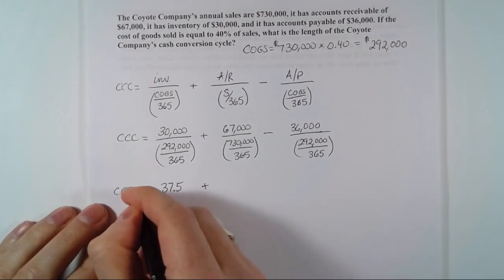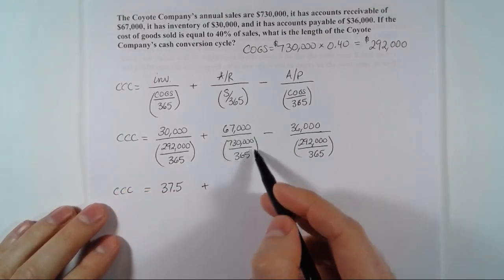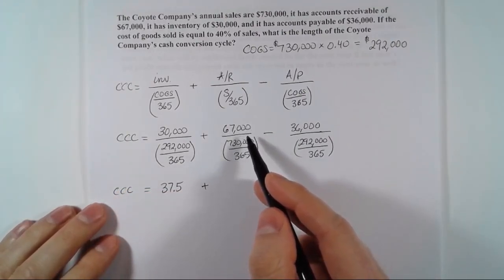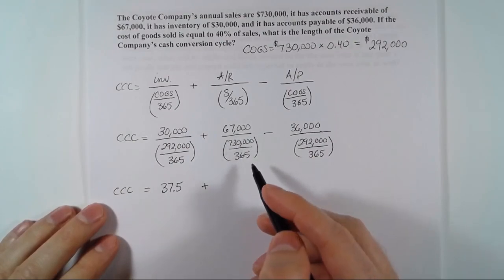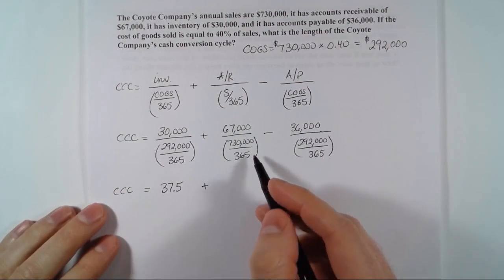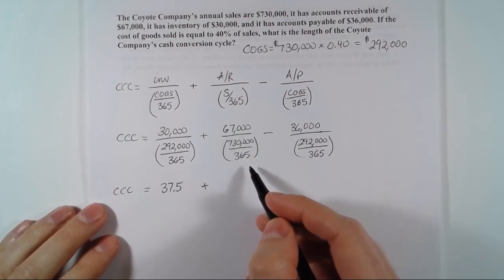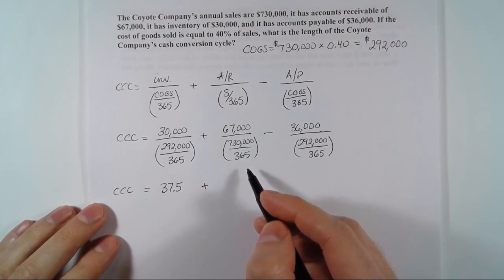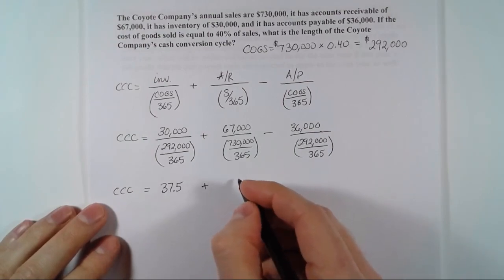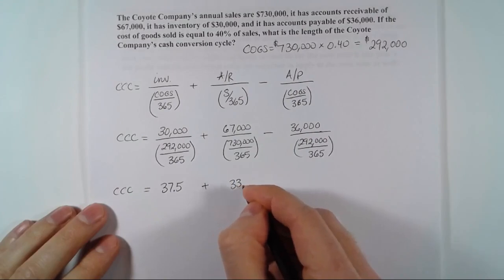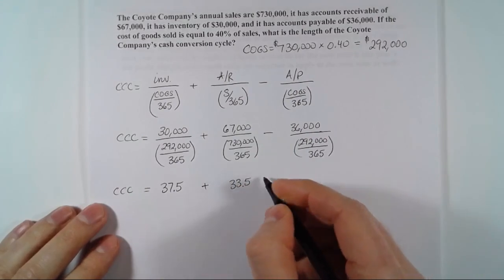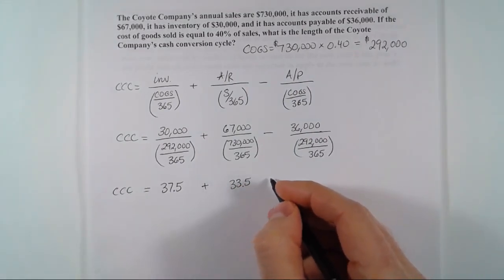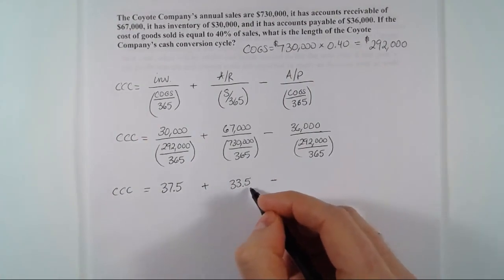The next piece is the days sales outstanding — how long from the time the sale is made to when cash is actually collected. Working that out, you should get 33.5 days, meaning it takes 33.5 days on average from when a sale is made to when the cash is collected.